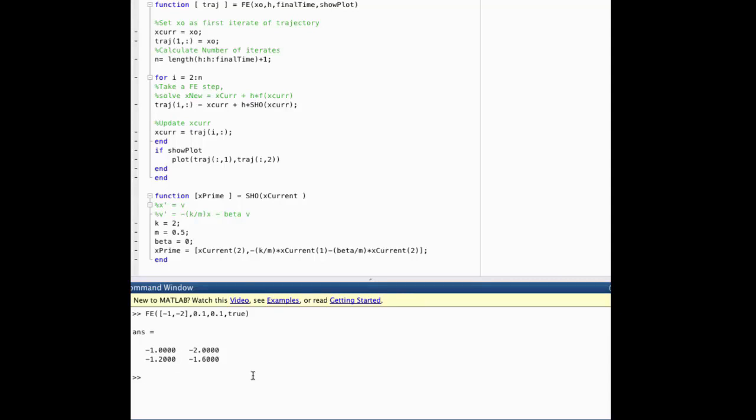The first problem is to generate a trajectory for 0.5 seconds starting at k equals 2, m equals 0.5, and beta equals 0 from the initial condition negative 1, negative 2, and see what we get. So starting from our initial condition negative 1, negative 2, using a step size of 0.1, and going to time, or final time, 0.5,